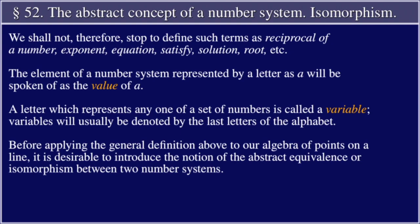Variables will usually be denoted by the last letters of the alphabet. Before applying the general definition above to our algebra of points on a line, it is desirable to introduce the notion of the abstract equivalence or isomorphism between two number systems.